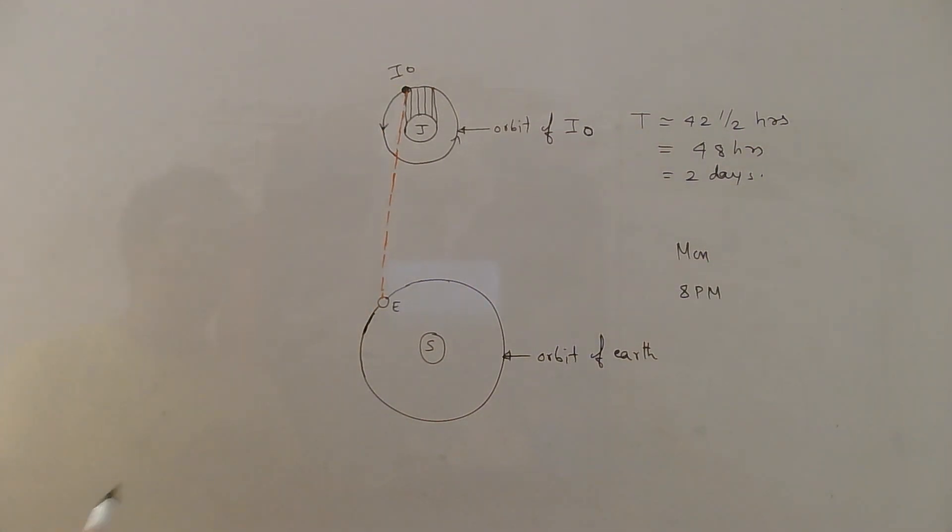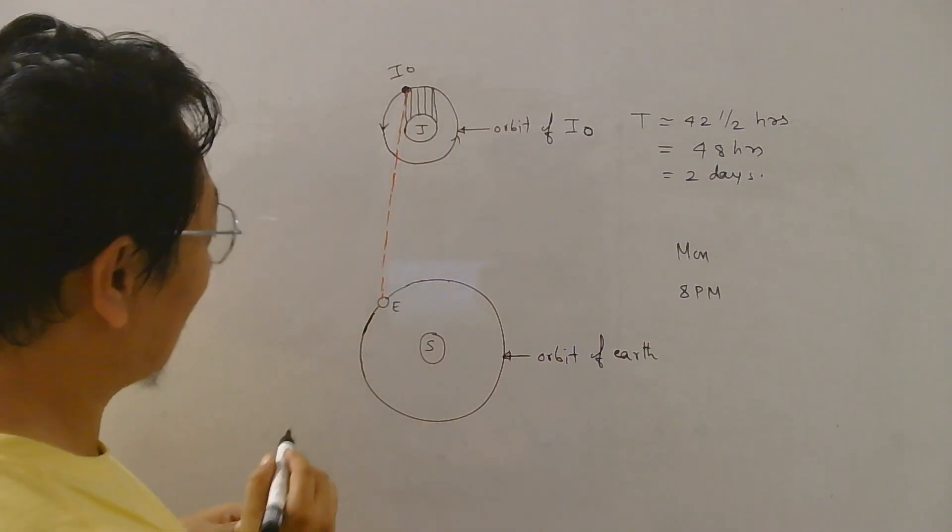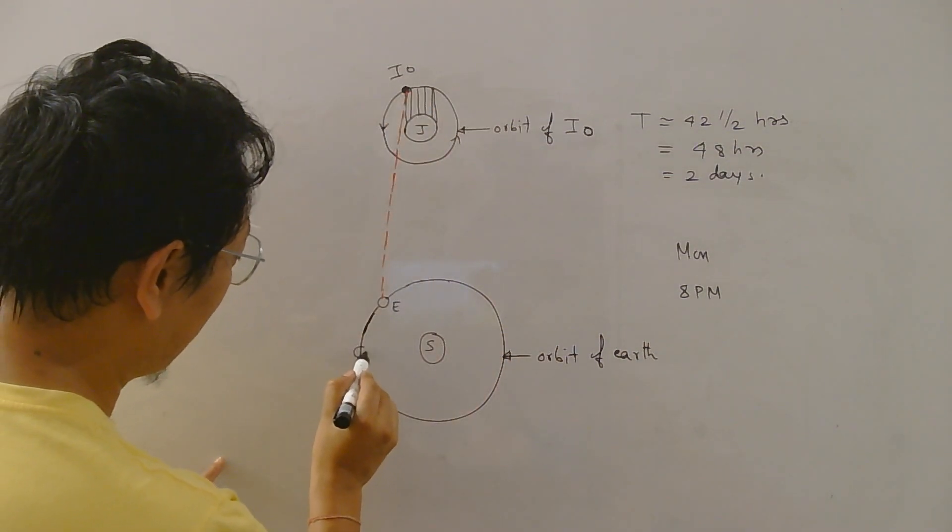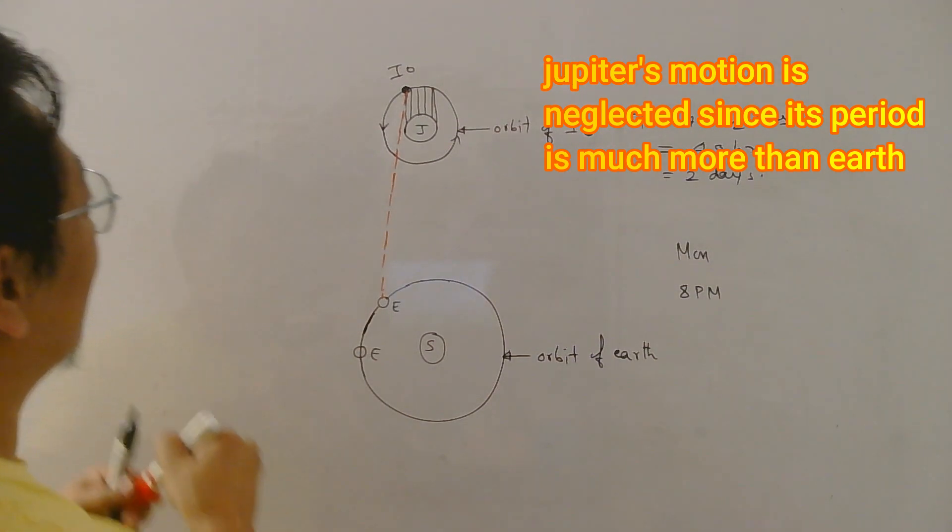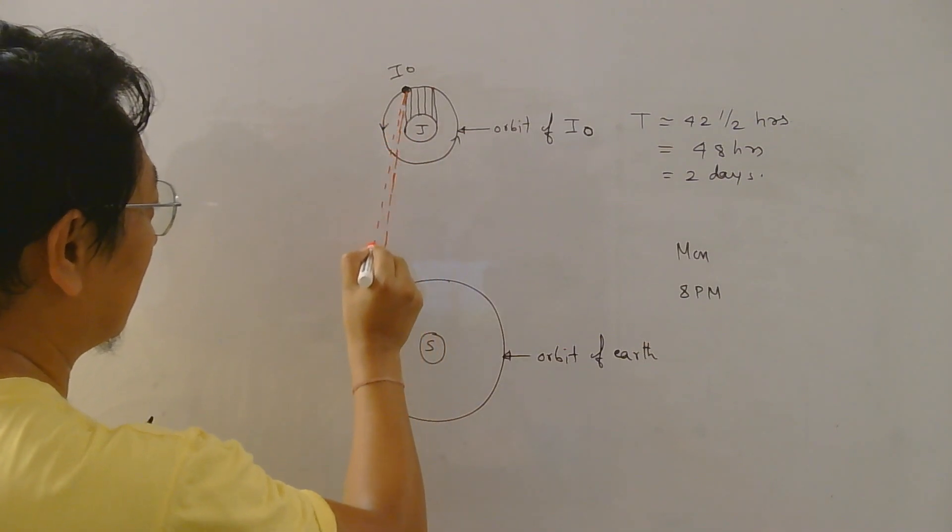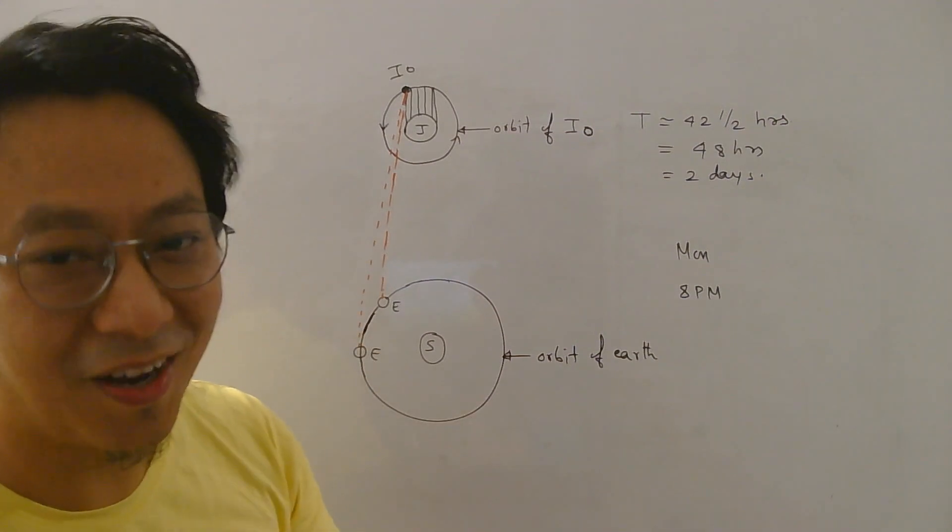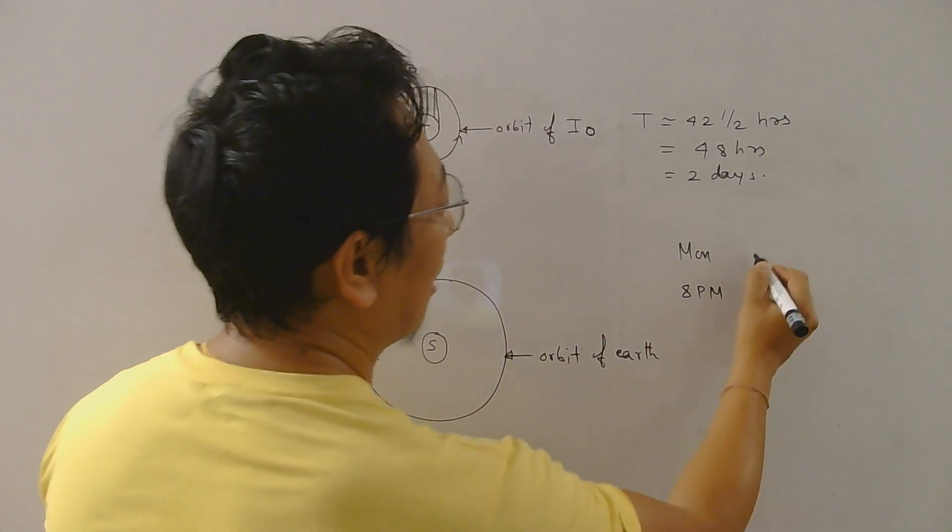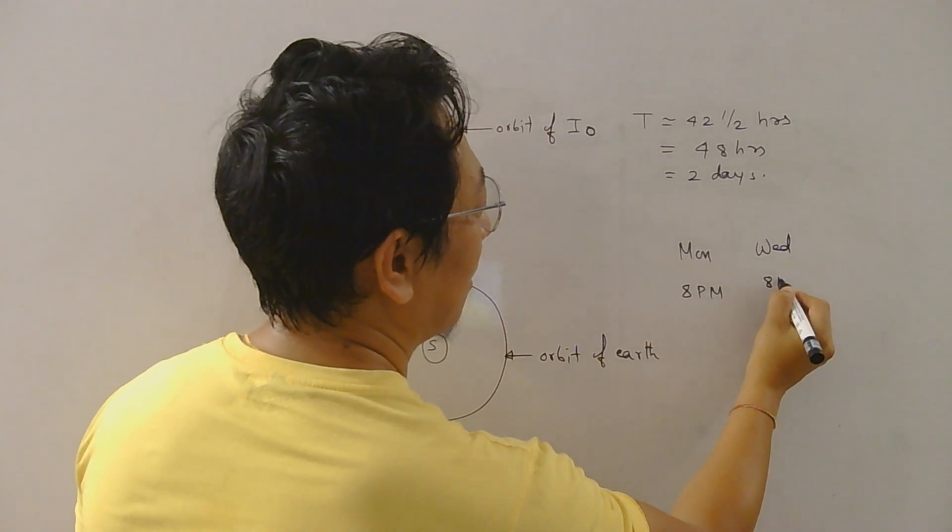Now in 2 days time Io is back here and by that time Earth may be somewhere here, isn't it. Now light has to travel this distance from Io to reach Earth so that you can see the moon rise. So now in 2 days time this will become Wednesday 8 PM.